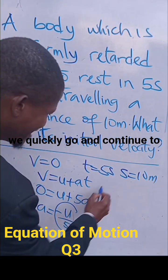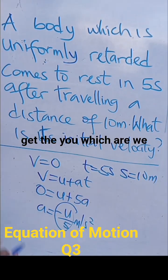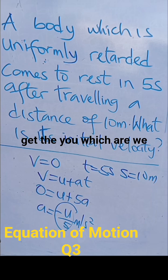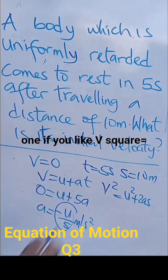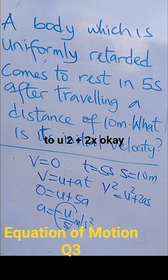Then we are going to continue to get the U. Which equation are we going to use now? The choice is yours. You can use this one if you like: V squared equal to U squared plus 2AX. Okay?